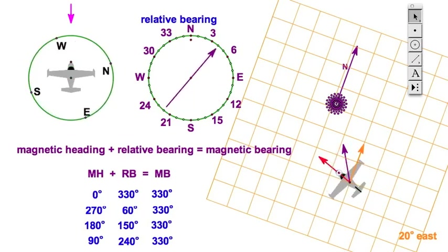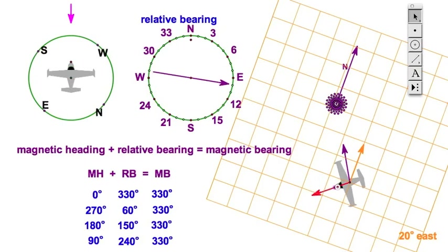The relative bearing, which is relative to the nose, is going to be a little bit different, or a lot different. But, in each case, because it hasn't geographically moved, the magnetic bearing stays the same.